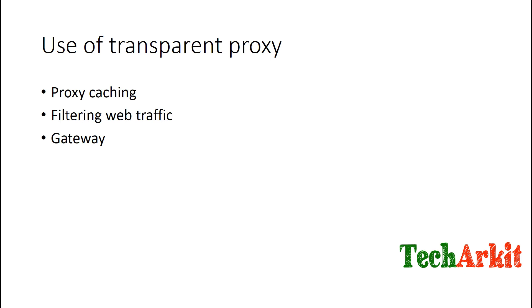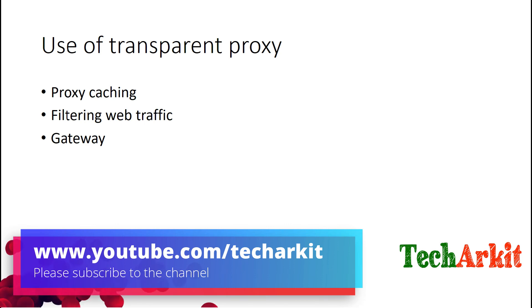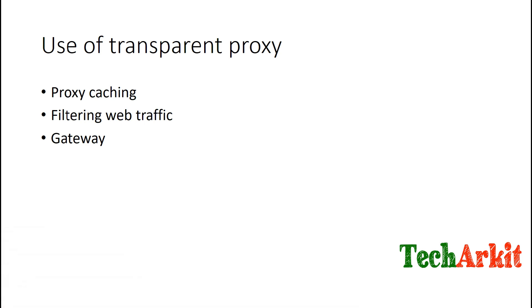In the next session we are going to see how we can set up this transparent proxy server using the CentOS 7 operating system. You don't need to set up proxy settings on the client side — just go ahead and install the transparent proxy on your organization's gateway. Automatically, users' requests will go through your transparent proxy. That's it about the transparent proxy. Thanks for watching.